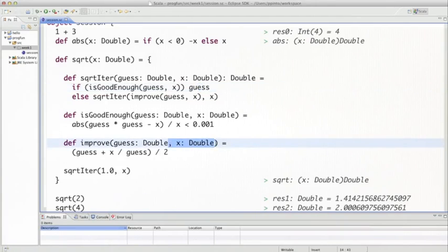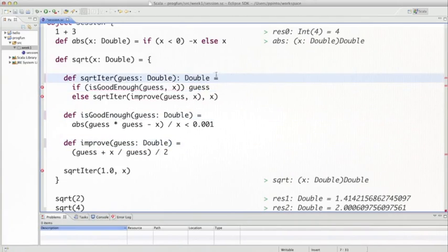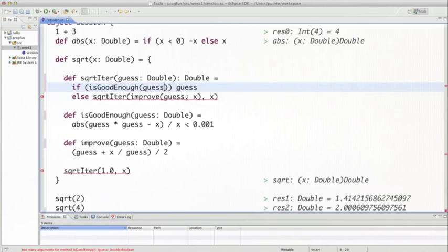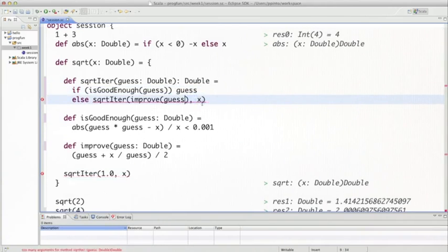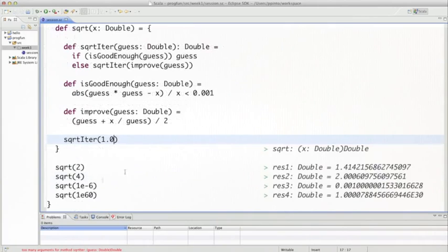So we can simply eliminate it, all these occurrences here, and eliminate the corresponding parameter in the application. And we have the same version of square root.